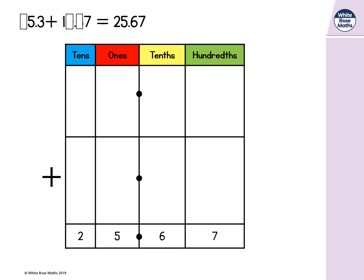In this example some of the digits are missing. Let's put counters into our place value grid for the digits that we do know.